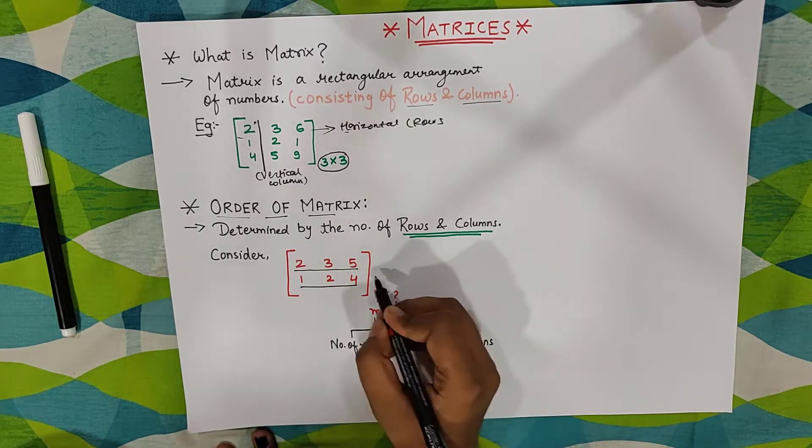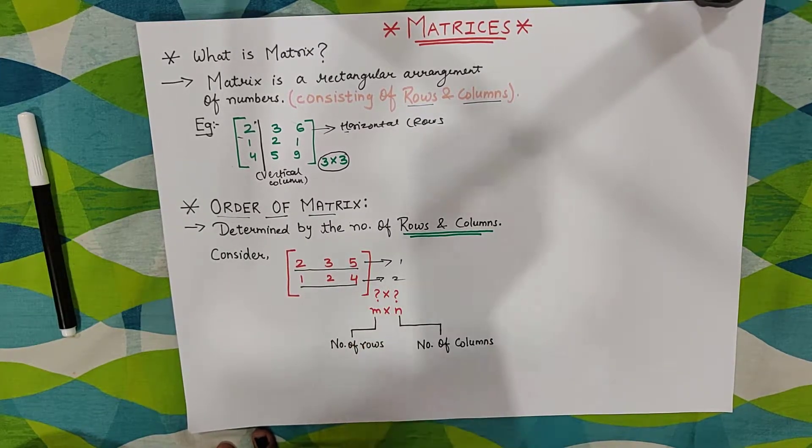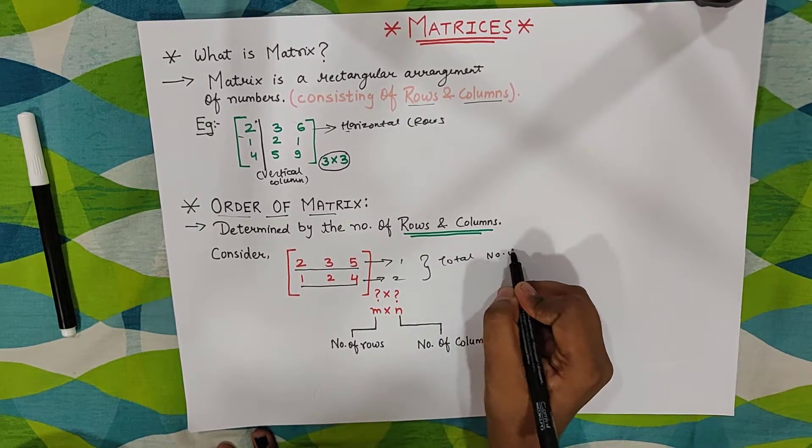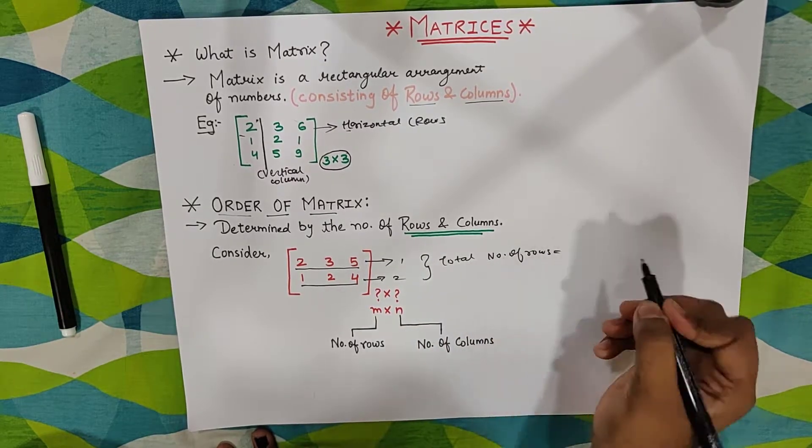One, two. So how many rows are shown here? This is one row. This is the second row. So total number of rows - how much? Two.